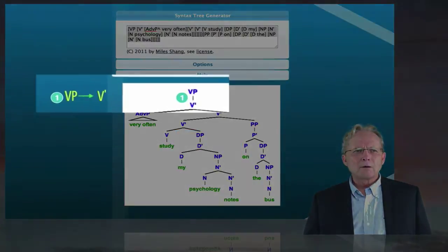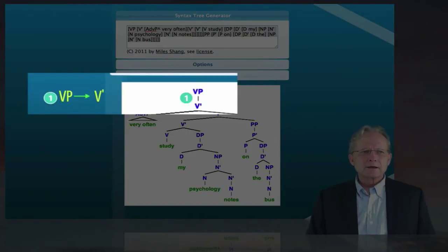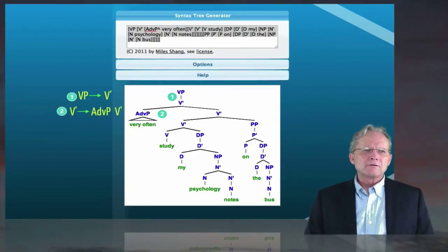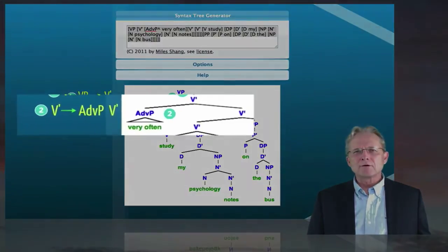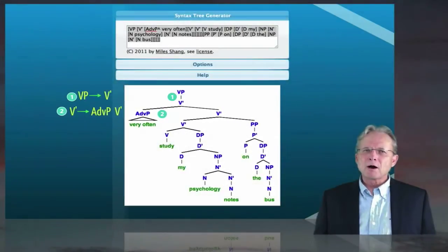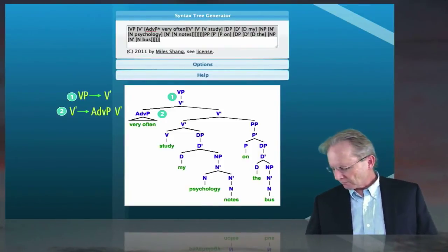So the verb phrase can consist of a V bar and then that V bar can be expanded in various ways. One way is that an adverb phrase can be placed on the left and that then is followed by another V bar. So the V bar mechanism allows us to add various adjuncts to the left and to the right.